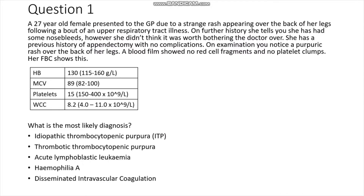Let's get into our first case. We have a 27-year-old female who presented to the GP due to the appearance of a strange rash over the back of her legs following a bout of an upper respiratory tract illness. On further history she tells you she has had some nosebleeds but didn't think it was worth seeing the doctor over. She has a previous history of appendectomy with no other complications. On examination you notice a purpuric rash over the back of her legs. A blood film shows no red cell fragments and no platelet clumps, and her full blood count is shown. Please feel free to pause the video and have a go at the answer.